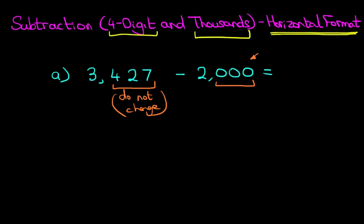Okay, they do not change. How about the thousands? Well, we've got two thousands here and we've got three thousands over here. Three minus two equals one. And that's it, we've done it.